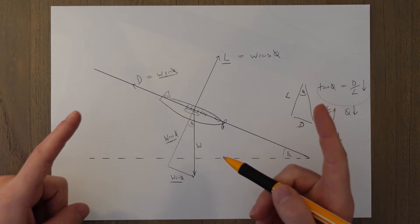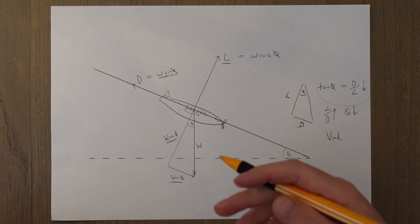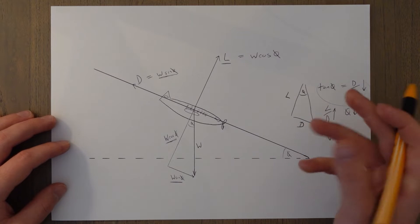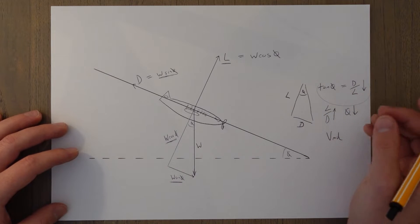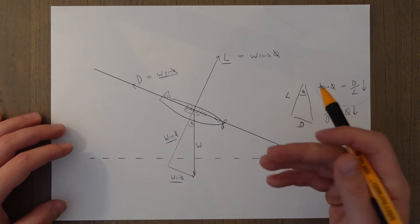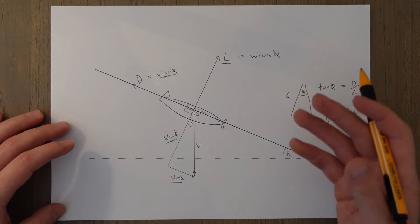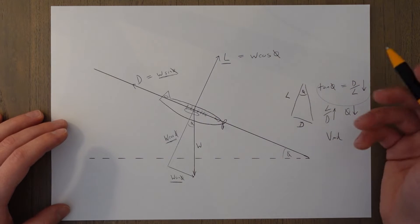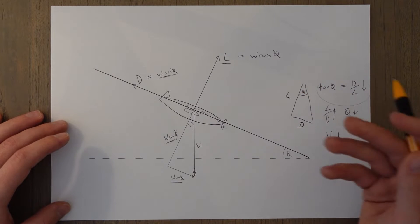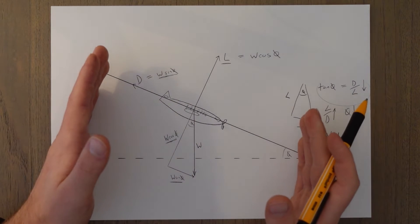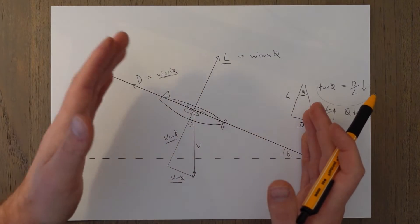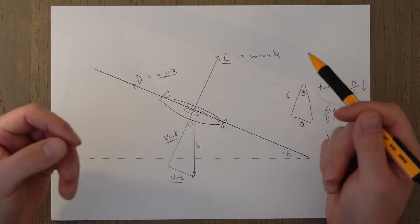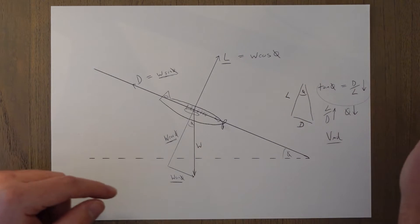As weight increases, we need more lift to support that weight. When we generate more lift, we also generate more induced drag. That means the ratio of drag to lift — or lift to drag — doesn't actually change; it remains the same ratio. So we have the same angle of glide regardless of weight. The only thing that changes is the speed: when heavier, VMD occurs at a higher speed, so we fly faster and cover the same glide distance in less time. Weight has no influence on the glide angle.